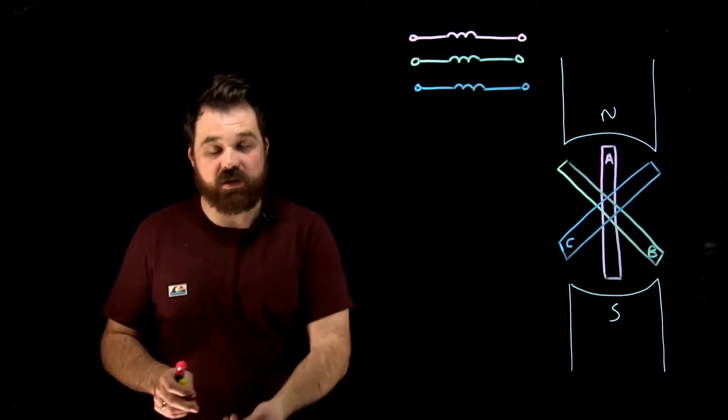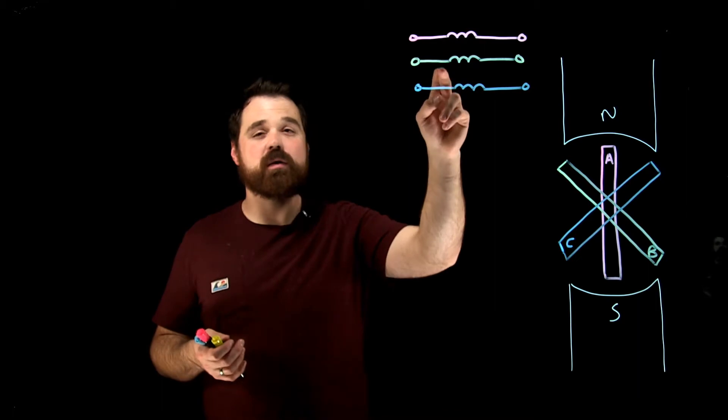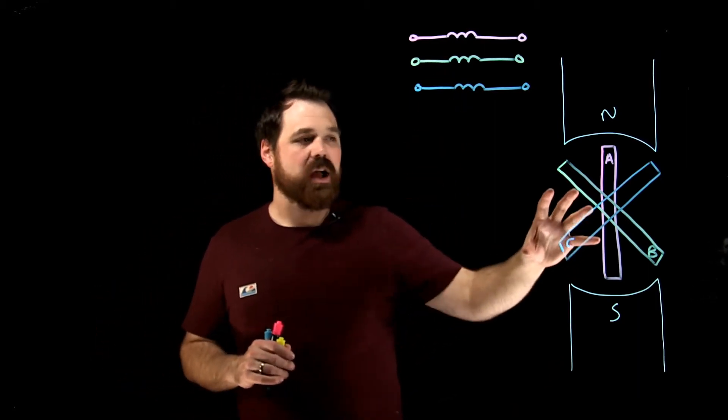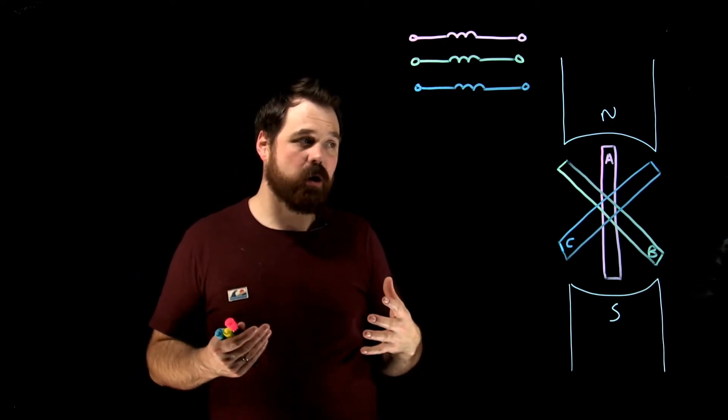What we do is we take three individual windings or three coils - our A coil, B coil, C coil, A phase, B phase, C phase - and we place those 120 physical degrees apart.